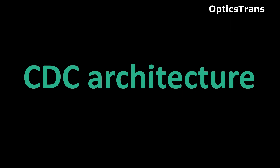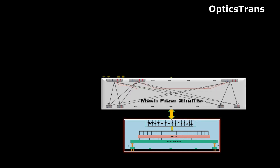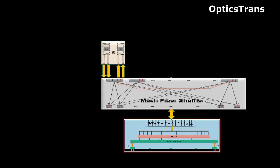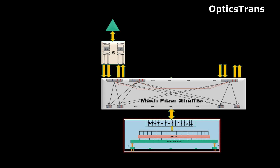These are the main components of CDC architecture. Now let's connect them to each other to transmit the signal. The MCS card connects with the fiber shuffle, and the output of the fiber shuffle connects with 8 dual WSS for different directions. The output of WSS connects with the amplifier. Similarly, if we want to connect more directions, we'll connect additional WSS with the fiber shuffle. Now let's look at add, drop, and pass-through scenarios.